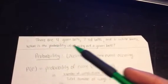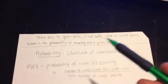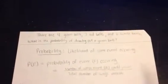So if in some given container you have four green balls, seven red balls, and six white balls, what is the probability of drawing out a green ball?